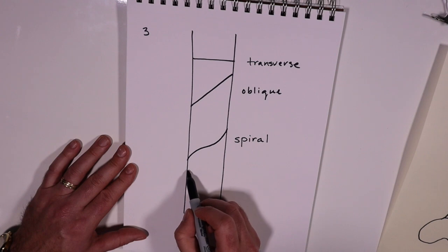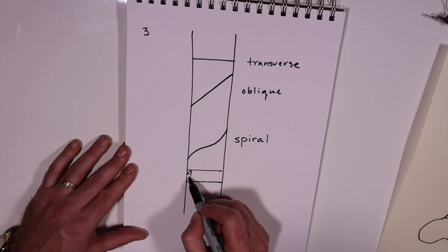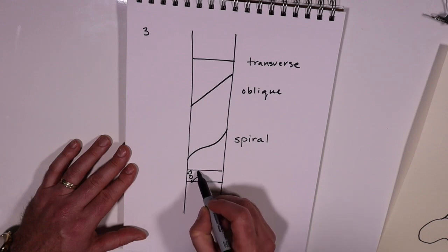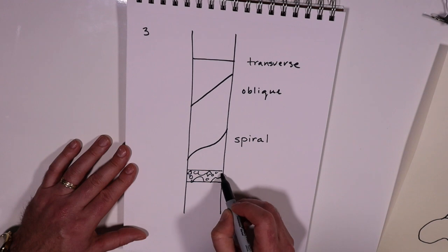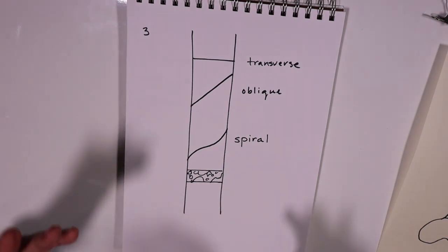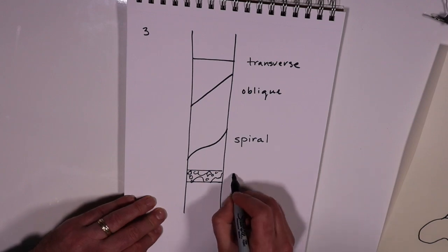Then you have what's called a comminuted fracture, which means that the fracture is in several pieces. It's not just one fragment or two segments. And there can be different levels of comminution. It can be highly comminuted, it can be minimally comminuted, but it just means that it's in more than two pieces. So that's comminuted.